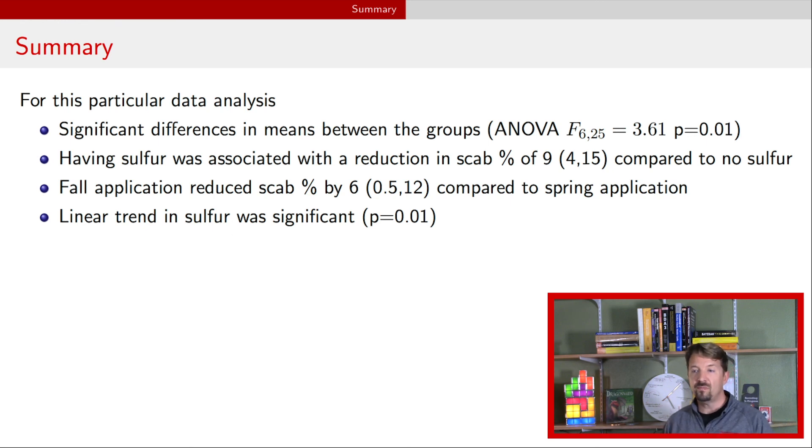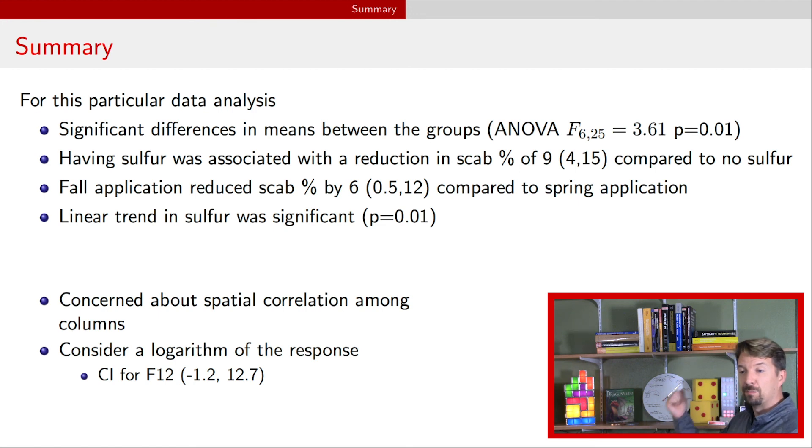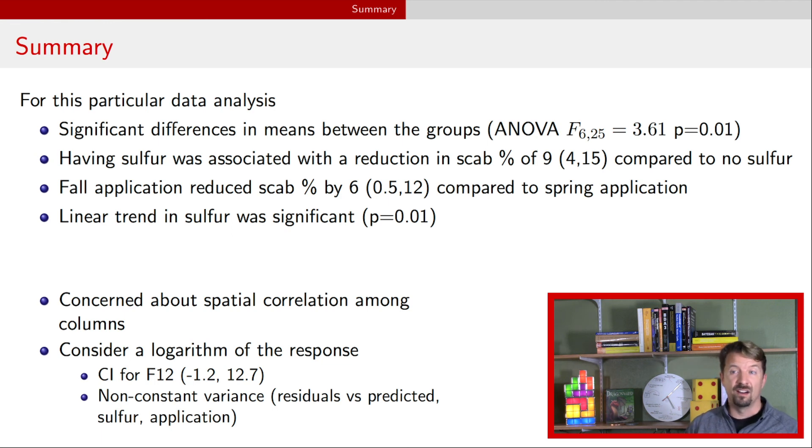Now, if you're doing this for a manuscript, you might want to go and investigate a little bit more about this spatial correlation amongst the columns. And finally, you might want to consider using a logarithm of the scab percent. One of the reasons is if you look at the estimated mean a couple of slides ago for the fall application of 1200 pounds per acre, you'll see that you have an estimated mean and its uncertainty of negative 1.2. Since scab percent has to be positive, that lower endpoint doesn't make a whole lot of sense. Secondly, we spotted that possibly non-constant variance. And so both of those will be fixed if you take a logarithm of scab percent and analyze that instead with the slight increase in difficulty of interpretation, but it's just a log. It just turns into multiplicative effects, nothing too big, nothing that you can't handle.